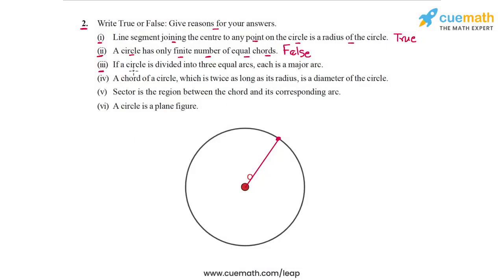Now the third statement says that if a circle is divided into three equal arcs, each is a major arc. So let's draw a figure for this. So here, I've drawn a figure in which we have a circle which is divided into three equal arcs: AB, BC, and CA. And the statement basically tells us that each arc is a major arc. But you know, you can visually see that this is not possible, because if each arc is a major arc, then if we add them, they will add to more than a full circumference.